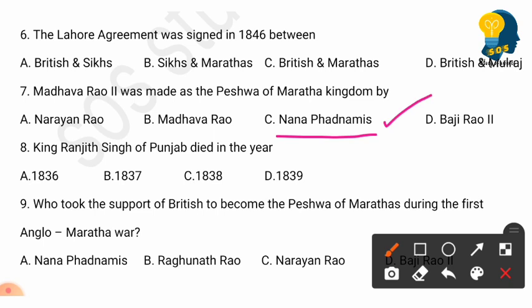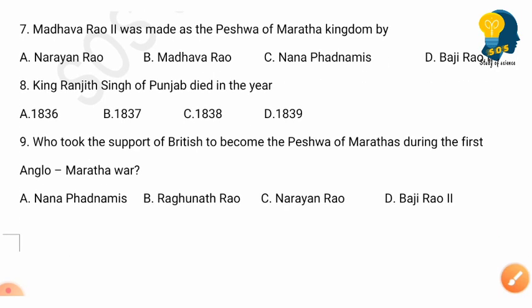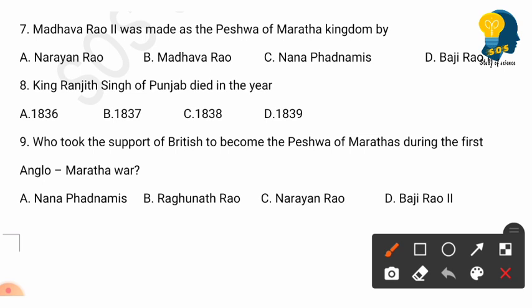Question 8: King Ranjit Singh of Punjab died in the year — options: 1837, 1838, 1839. The correct answer is option D: 1839 was the year King Ranjit Singh of Punjab died.